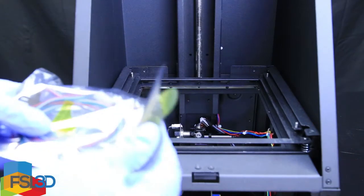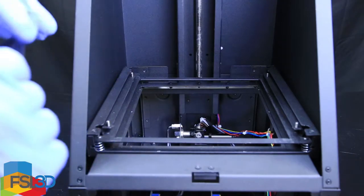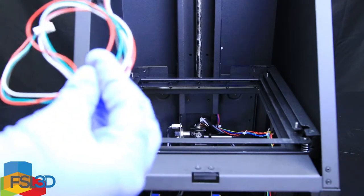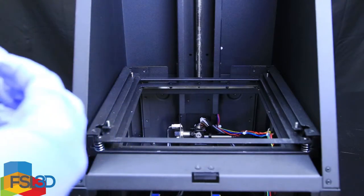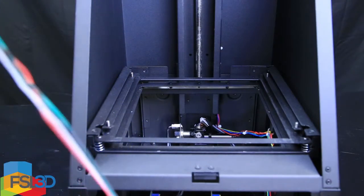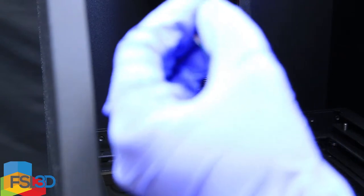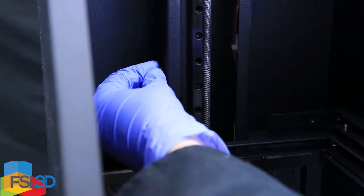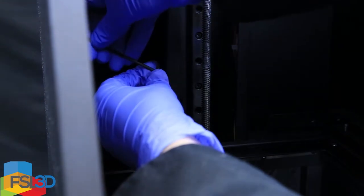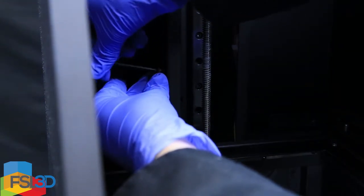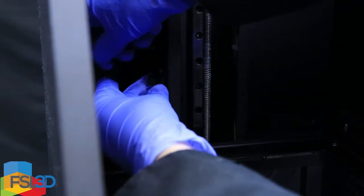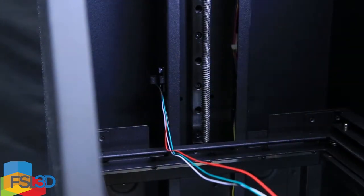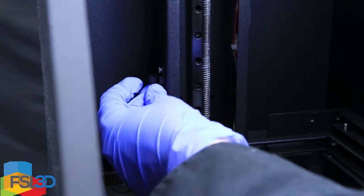Begin by removing the new limit sensor. Take one of the screws and attach the sensor to the spine of the case, making sure that the cables run downward. Secure it with the second screw.